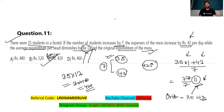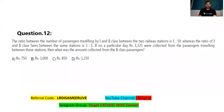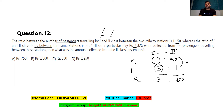Question number 12: the ratio of passengers travelling by first and second class between two railway stations is 1:50. The ratio of first to second class fare is 3:1. Revenue from first class is 3 rupees per unit, and from second class it is 50 rupees, making total revenue in ratio 3:50, totalling 53 rupees per unit.